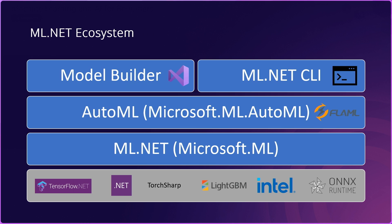So, what exactly makes up the ML.NET ecosystem? Starting at the bottom layer, there's a set of libraries that power ML.NET. For deep learning scenarios — such as vision, text classification, and language scenarios — some of those are powered by libraries like TorchSharp, which is a set of .NET bindings for the LibTorch library that powers PyTorch. As well as TensorFlow.NET, which gives you access to .NET bindings for the TensorFlow library.